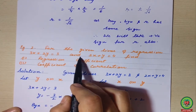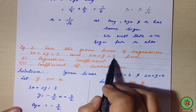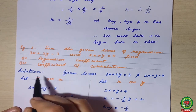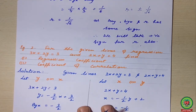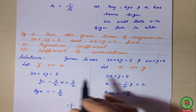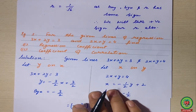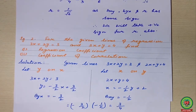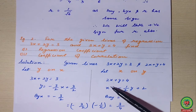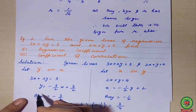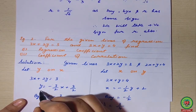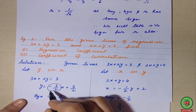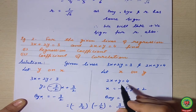Now taking one more example: we have two equations — 3x + 2y = 3 and 2x + y = 4. We have to find the regression coefficients and coefficient of correlation. We write the equations by partition. Finding y on x from the first equation: shifting all terms gives y = −(3/2)x + 3/2, so byx = −3/2.